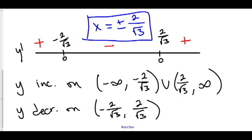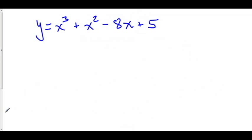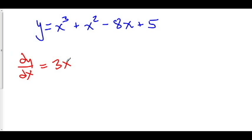Let's do another one. y equals x cubed plus x squared minus 8x plus 5. Where is y increasing and where is y decreasing? First, let's find dy/dx. dy/dx is equal to 3x squared plus 2x minus 8, and let's set this equal to 0.